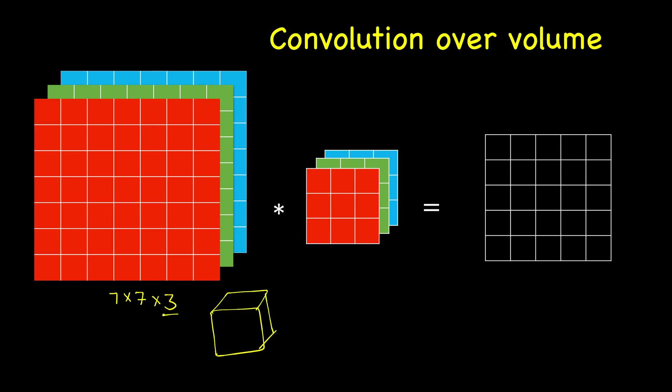You will not have always three channels; you can have many more channels. So this will be 7×7, and this number of channels, or sometimes also called depth, is 3.